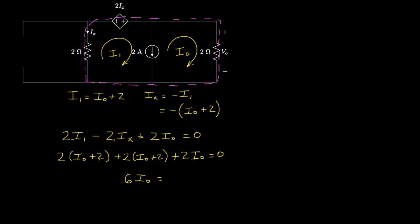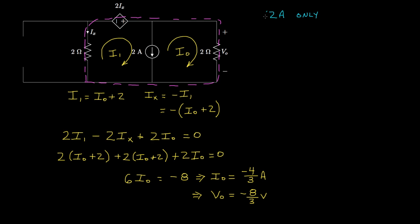Substituting, we get one equation in one unknown: 6·IO = −8, so IO = −4/3 amps. The voltage across the 2-ohm resistor is twice that, giving VO = −8/3 volts due only to the 2-amp current source.